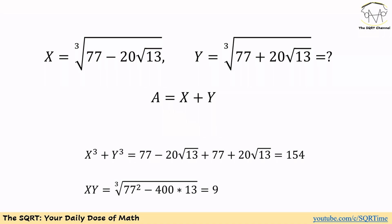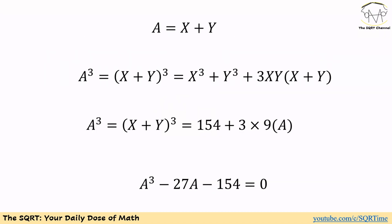Now we can use these results to solve the problem. We have x³ + y³ and we have xy. We calculate a³ first: a³ = (x+y)³ = x³ + y³ + 3xy(x+y). We already know x³ + y³ = 154 and xy = 9, so we substitute and get a³ = 154 + 3 times 9 times a. Rearranging, we have a³ minus 27a minus 154 = 0.